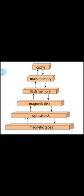Flash memory and magnetic disc are secondary memory. These are non-volatile memory and permanently store data. Other examples of secondary memory include optical disc and magnetic tapes.